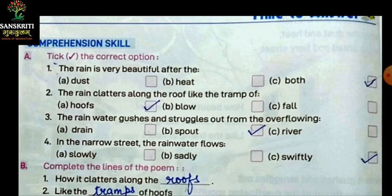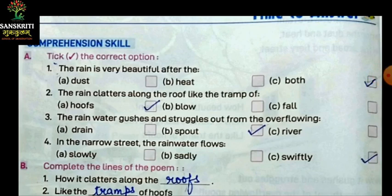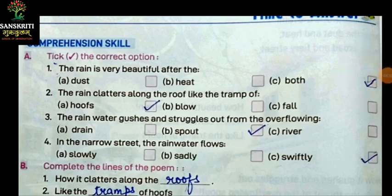Next is: the rain water gushes and struggles out from the overflowing — jho baarish ka paani hota hai, jab woh bahut saara ho jaata hai, uski jab bochhar hoti hai aur bahaar nikalne ke liye — rain, spout ya phir river? Usko hum spout bolenge, toh hum spout par tick karenge. Next: in the narrow street, the rain water flows — slowly, sadly, ya phir swiftly? Swiftly. Toh hum swiftly par tick karenge.